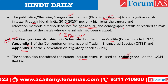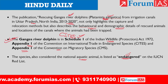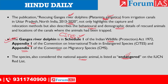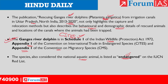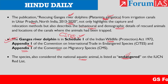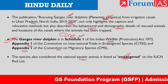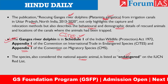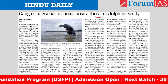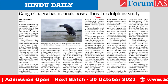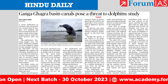The Ganges River Dolphin is also considered the National Aquatic Animal and is listed as Endangered on the IUCN Red List. These dolphins are found in the Ganga, Brahmaputra, and Meghna delta. Monitoring this huge area and the canal system is a challenge, but rescue and relocation efforts continue. The Ganga-Ghagra Basin Canals are posing a significant threat to these dolphins.